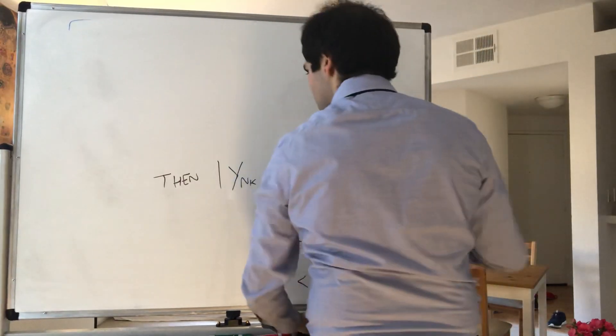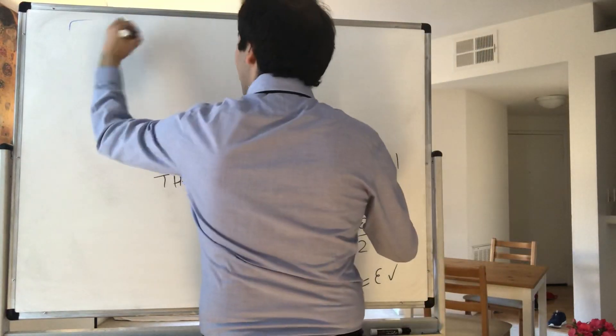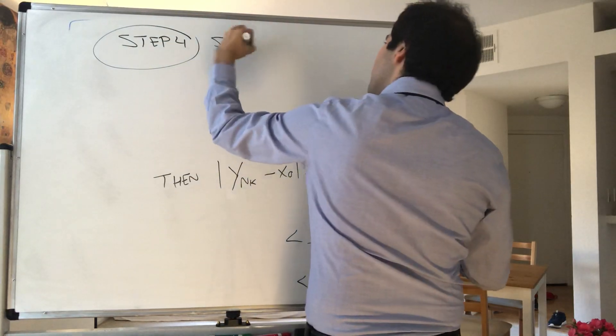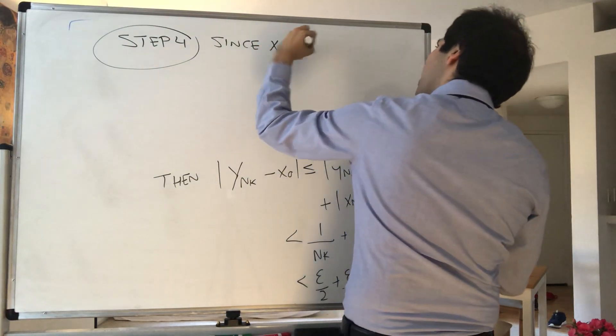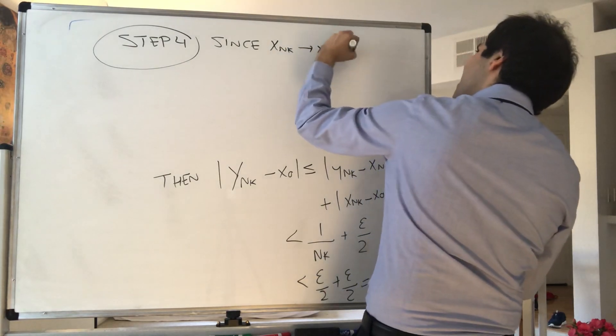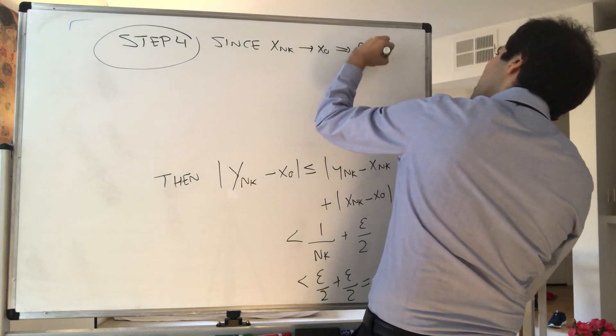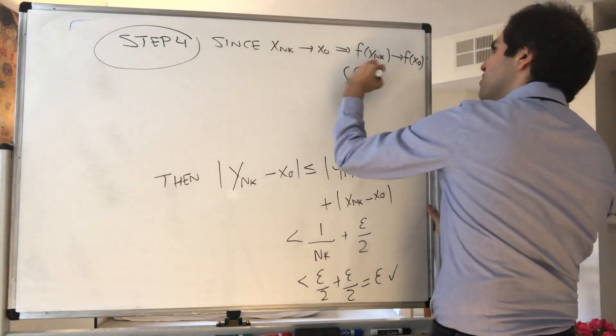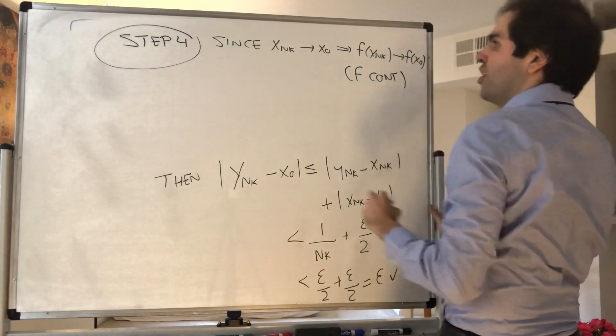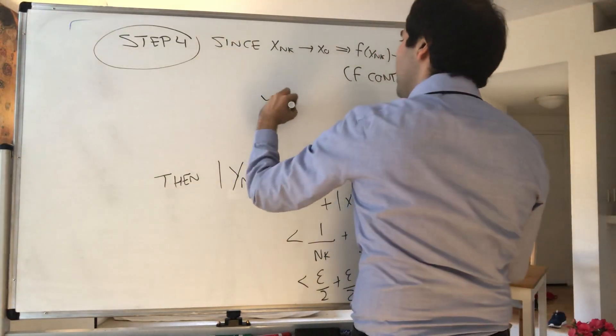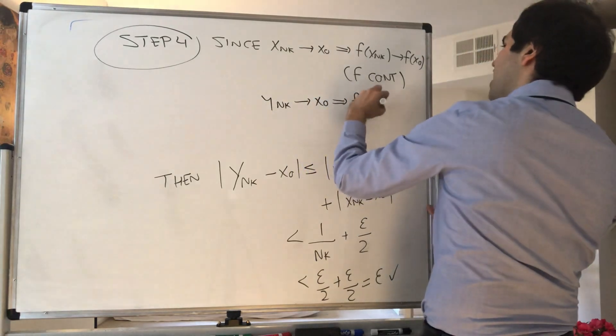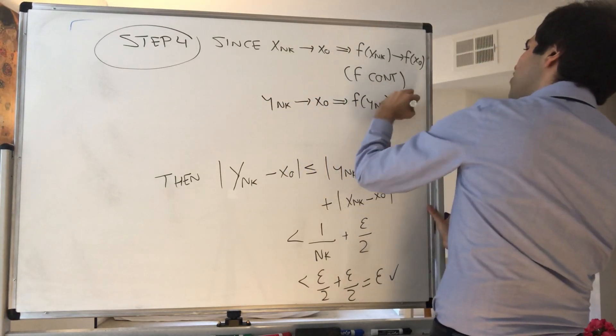So I think step 4. You see, since x_nₖ goes to x₀, we get f(x_nₖ) goes to f(x₀), because f is continuous—so we never used this so far. And similarly, y_nₖ goes to x₀, that implies f(y_nₖ) goes to f(x₀).